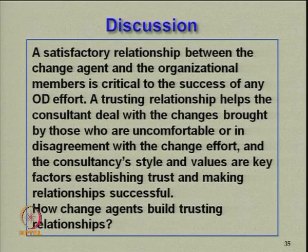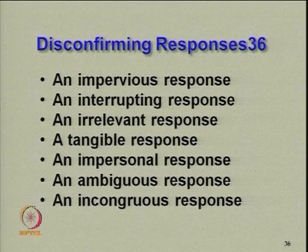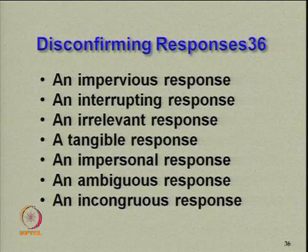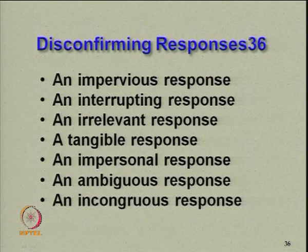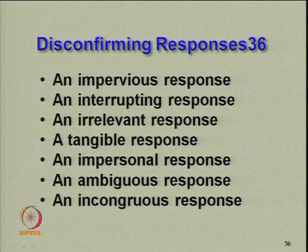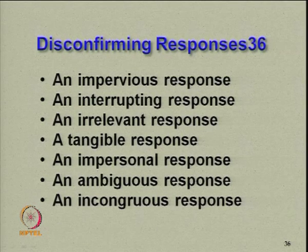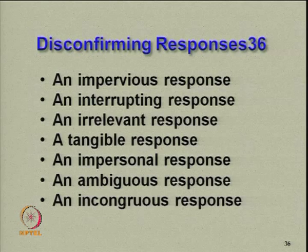There are several types of disconfirming responses — learn to deal with them. When the relationship is like two people with their backs to each other, you will have disconfirming responses. First, an impervious response: that is all right, but they would not listen to you. Second, an interrupting response: the moment you start talking, the other person says no, no, no, that is not the way it is.